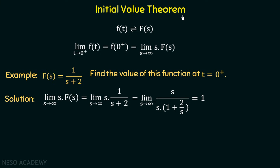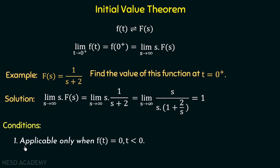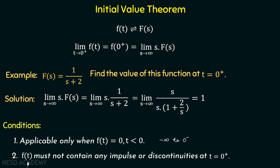Now we will discuss the conditions for the initial value theorem to be applicable. Signal f must satisfy two conditions. Condition 1: f(t) must equal 0 when t is less than 0, that is, from minus infinity to 0 minus, the function must be zero. Condition 2: f(t) must not contain any impulse or discontinuities at t equal to 0. If these two conditions are satisfied, the initial value theorem is applicable.